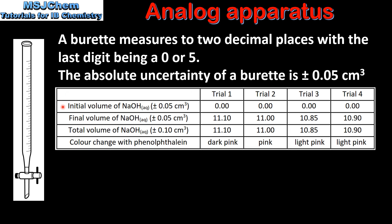Here we have a table of results from an acid-base titration. In this table we have the initial volume of sodium hydroxide, the final volume of sodium hydroxide, and the total volume of sodium hydroxide. The initial and final volumes of sodium hydroxide both have an absolute uncertainty of plus or minus 0.05 centimeters cubed. The total volume of sodium hydroxide has an absolute uncertainty of plus or minus 0.10 centimeters cubed.